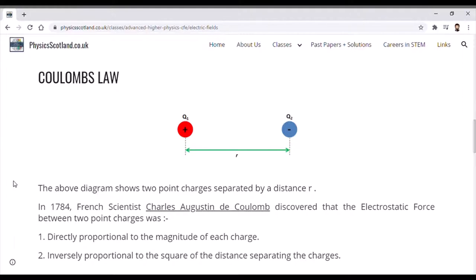The scientist that came up with this was Charles Augustin de Coulomb, hence why we call this Coulomb's law. He discovered experimentally that the electrostatic force between two point charges was directly proportional to the magnitude of each charge, so the larger the charge, the stronger the force between them.